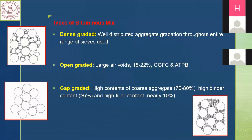There are different criteria to classify bituminous mixes. One is based on production temperature, already discussed. The second and most widely used classification is based on gradation — what kind of gradation the bituminous mix has. Based on gradation, bituminous mixes can be classified into three major categories: dense graded, open graded, and gap graded.